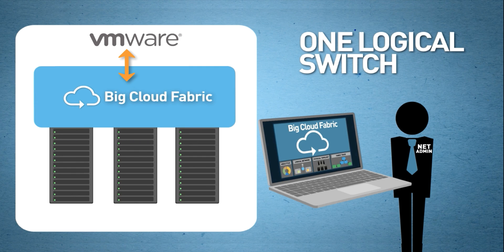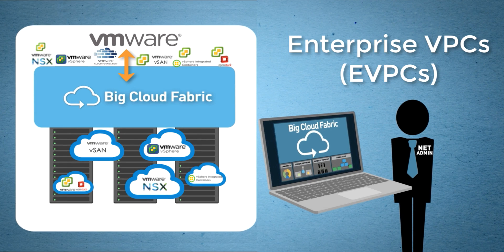Now how is Big Cloud Fabric different from traditional networking fabrics? Big Cloud Fabric leverages cloud networking principles which use constructs of virtual private cloud like AWS VPC for logical isolation across multiple tenants. Similarly, the BCF controller uses enterprise VPCs or eVPCs in the fabric for each of your VMware deployments, allowing logical isolation, multi-tenancy and self-service APIs, thus providing a public cloud-like experience for your on-prem deployments.